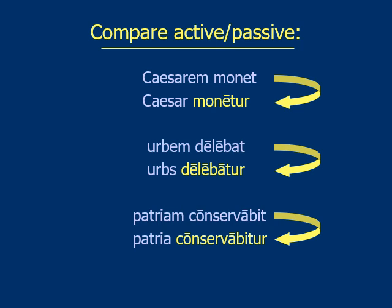You take the direct object, switch it to the subject — so it becomes Caesar. Then change the verb into passive: 'Caesar is advised.' Another example: 'urbem delebat' — he was destroying the city. Change the direct object to subject: the city is destroyed. It's imperfect because of that -ba-, so 'the city was destroyed.' Third example: 'patriam servabit' — he will save the fatherland. The -bi- tells you it's future. Change to passive: 'the fatherland will be saved' by him, or by whoever.